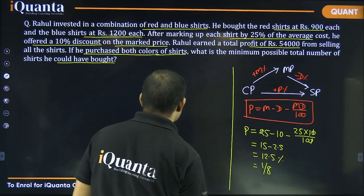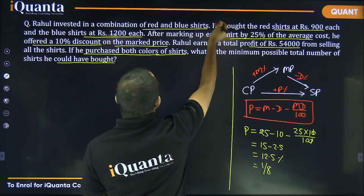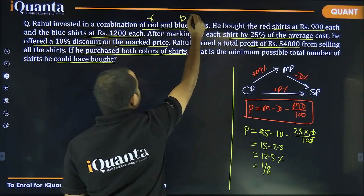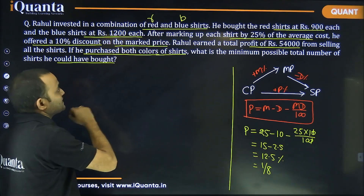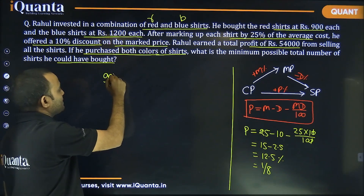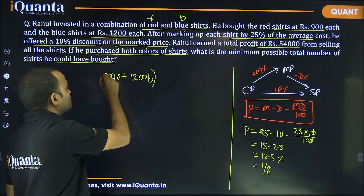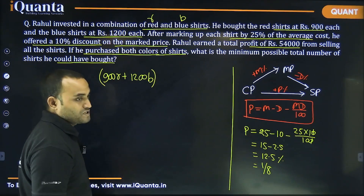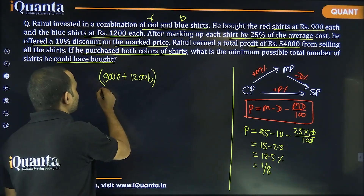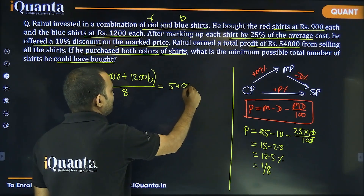Now, if the number of red shirts is R and the number of blue shirts is B, the total cost price will be 900R + 1200B. One-eighth of this total cost price will equal the total profit.